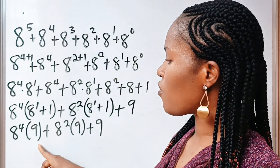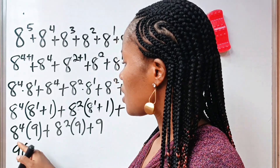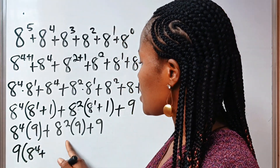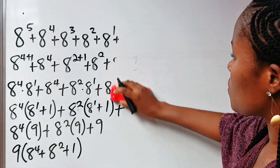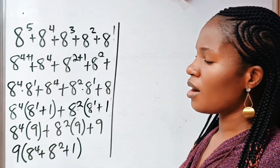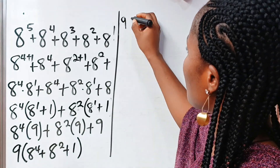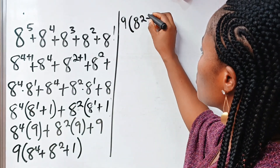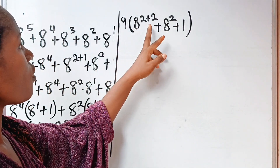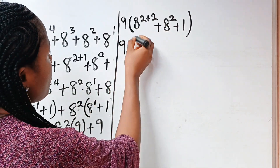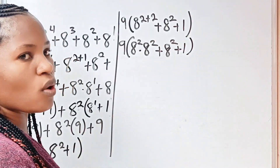Now, we have 8 to the power of 4, and we have 9, 9, and 9 — we can factorize 9 out. So we bring 9 out. This divided by 9 gives you 8 to the power of 4 plus; this divided by 9 gives us 8 to the power of 2; plus 9 divided by itself gives us 1. Now, remember that we're not going to use a calculator, so we need to simplify further. What we now have is 9 times bracket: 8 to the power of 4 can be expressed as 8 to the power of 2 plus 2, right? Plus 8 to the power of 2 plus 1. So, using the law of exponents, we simplify this further as 9 times bracket: 8 to the power of 2 multiplied by 8 to the power of 2, plus 8 to the power of 2, plus 1.